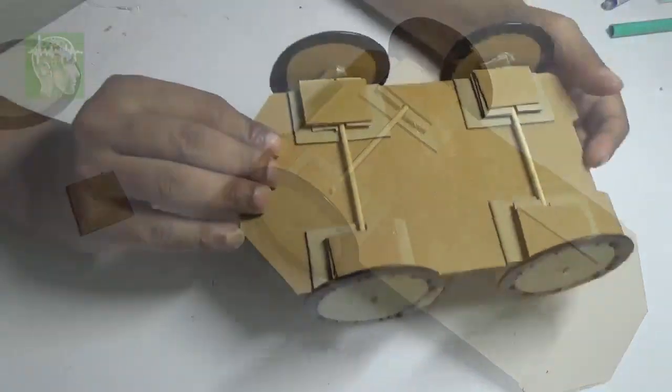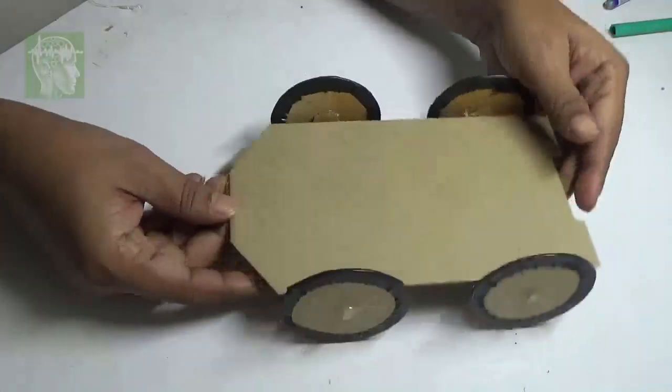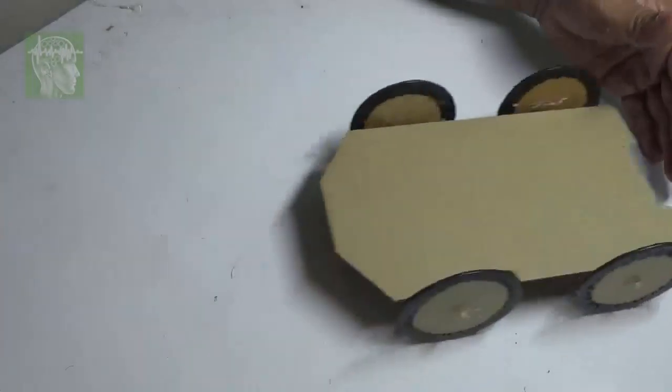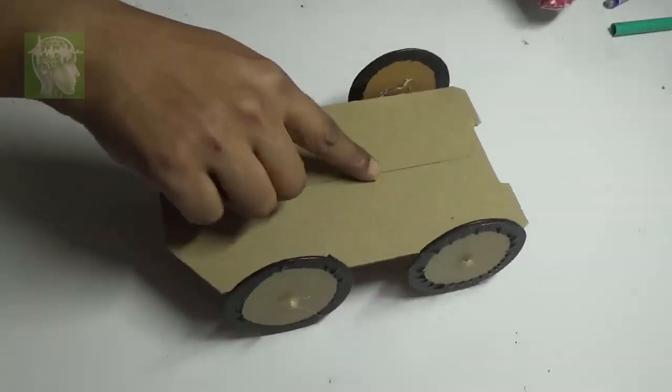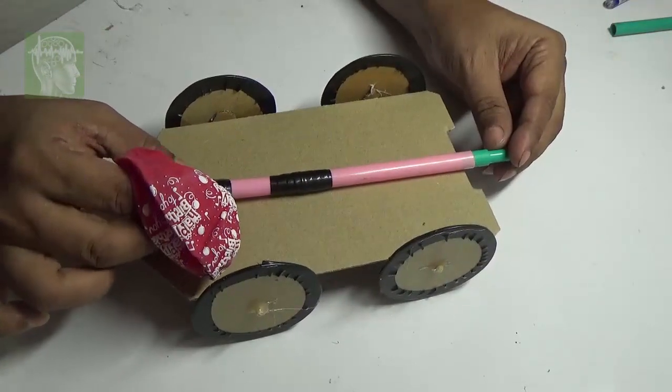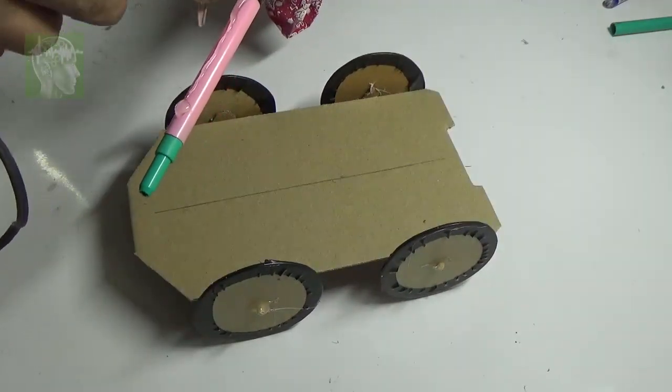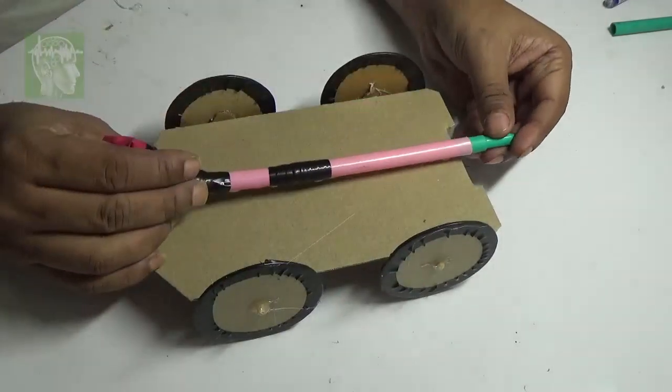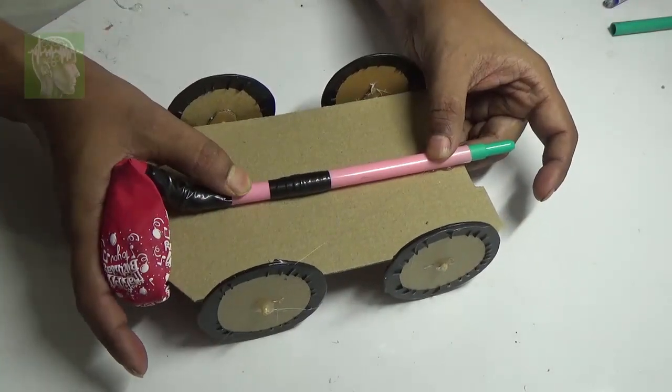Cut the extra shaft. Same way, fix all four wheels. Make sure they're moving freely. Draw a line at the center. Along this line, fix the pipe of the air pressure engine. Now blow the balloon and release the car slowly.